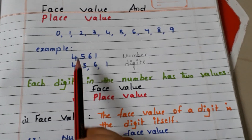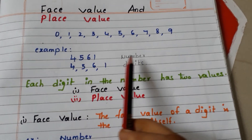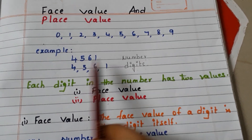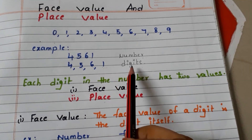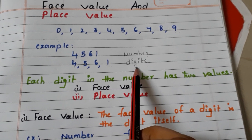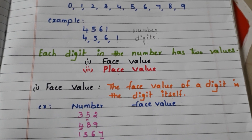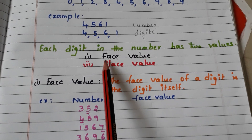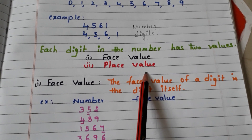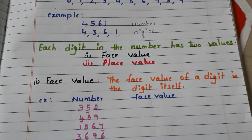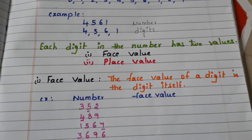Here, 4561 — this is the number, and 4, 5, 6, 1 are called digits. Each digit in the number has two values: one is face value and the other one is place value. Let us see what is face value and place value with examples.